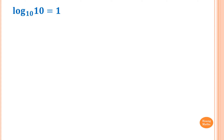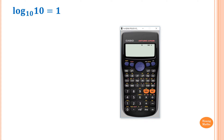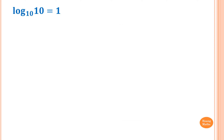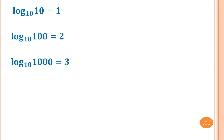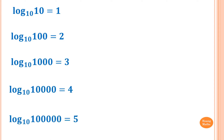So log 10 is equal to 1, log 100 is equal to 2, log 1000 is equal to 3, log ten thousand is 4, and log a hundred thousand is equal to 5. Let's just recap: log 10 is 1, log 100 is 2, log 1000 is 3, log ten thousand is 4, log a hundred thousand is 5.